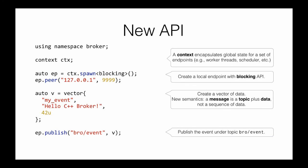We've tried to simplify things. We've encapsulated all global state in a context object. Now you just spawn your endpoint and describe which API you want — either blocking or non-blocking. Previously, you could only have one Broker instance in your entire process, making it very difficult to link multiple plugins. Now you just create a local context and it's safe. You create a vector of data and publish it to the endpoint — essentially no overhead in the API.